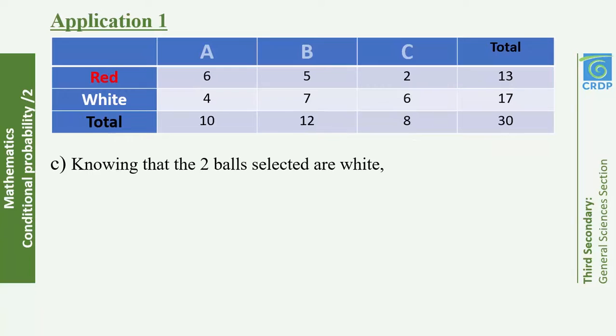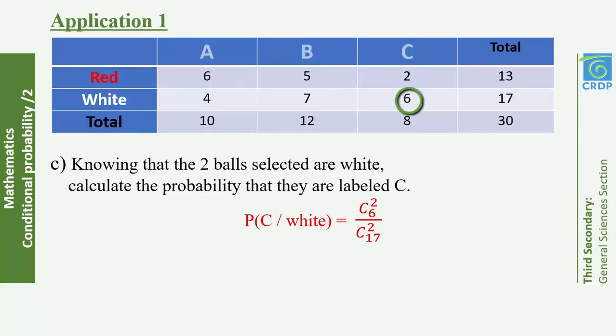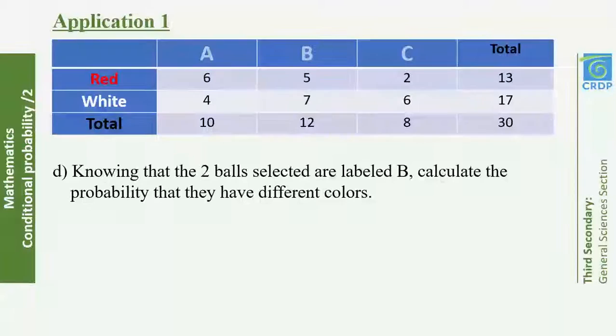Part C: Knowing that the two selected balls are white — as soon as you see 'knowing that,' think conditional probability. The denominator is the outcomes for white balls: there are 17 white balls, giving C(17, 2). The numerator is the white balls labeled C — there are 6, giving C(6, 2). So P(labeled C | white) = C(6,2) / C(17,2).